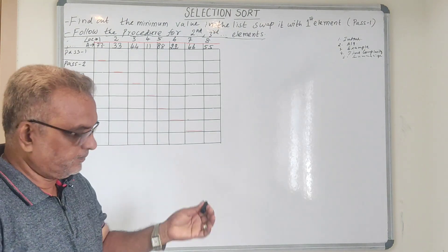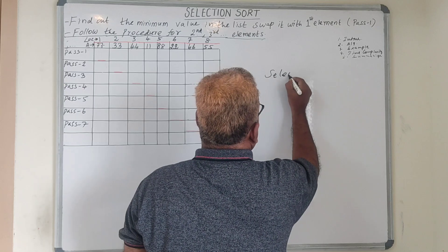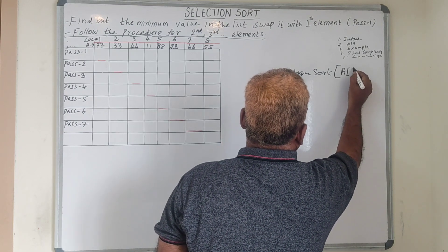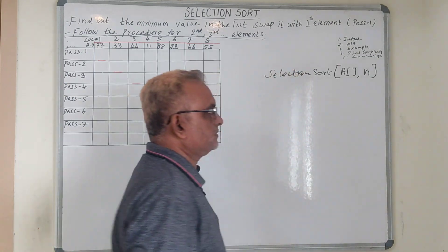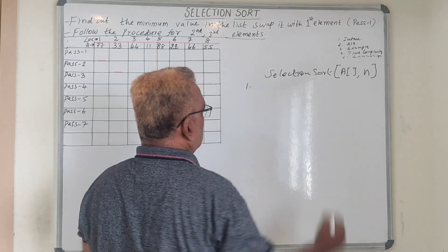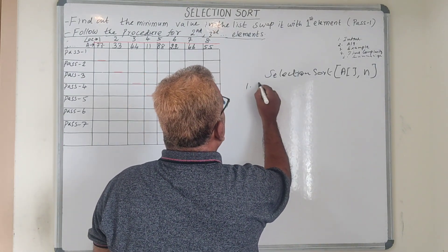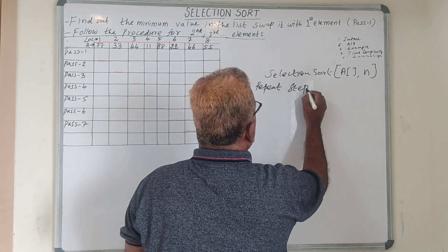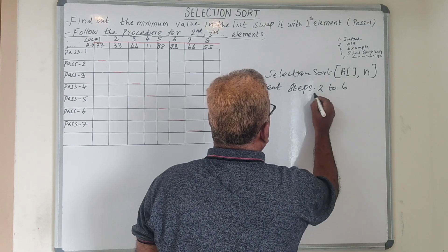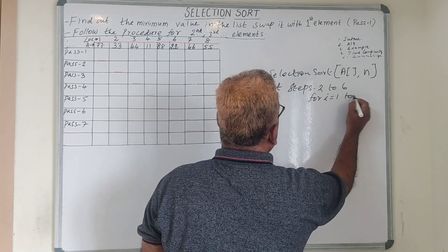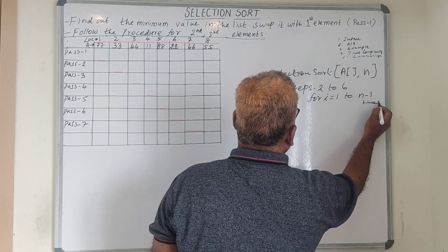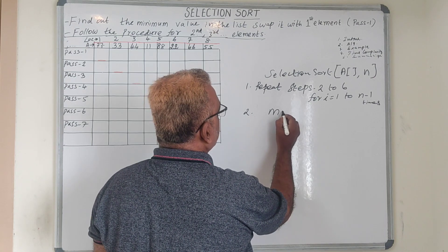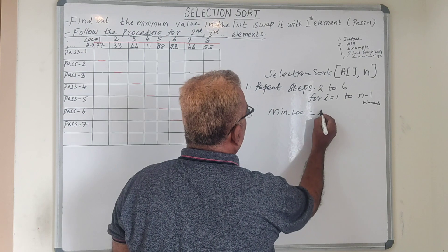Let us see the algorithm first. Selection sort, in which we are going to use the array a, and n represents the number of elements in the array. Step number one: repeat steps 2 to 6 for i equal to 1 to n minus 1 number of times. Step number 2: we assign the minimum location equal to i.